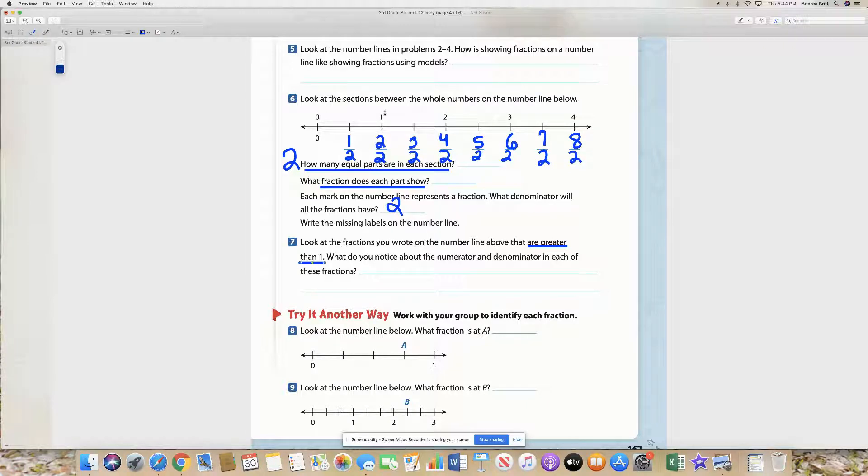So that means everything past one whole we're going to look at, because all of these fractions on this side of the number line are greater than one whole.